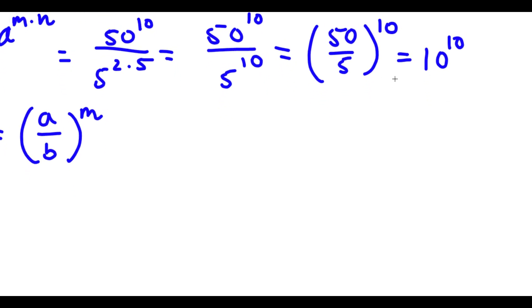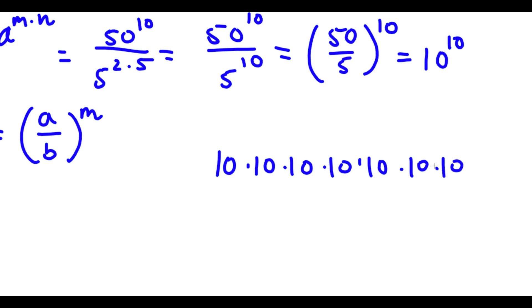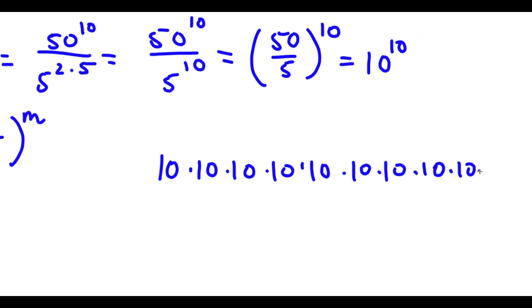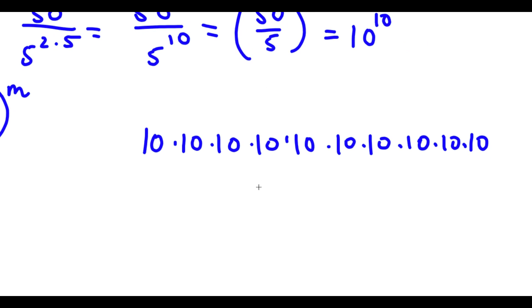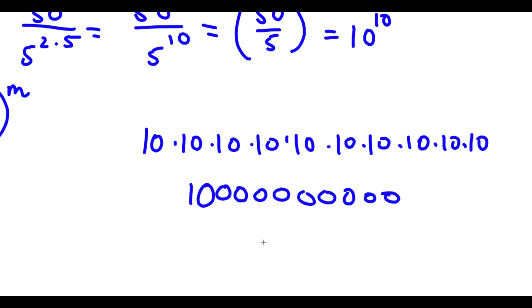And now we can actually simplify this. 10 to the power of 10 is the same thing as 10 multiplied by itself 10 times: 10 times 10 times 10 times 10 times 10 times 10 times 10 times 10 times 10 times 10. That gives us 1 followed by 10 zeros, which is 10 billion. So 10 billion is our answer to this problem.